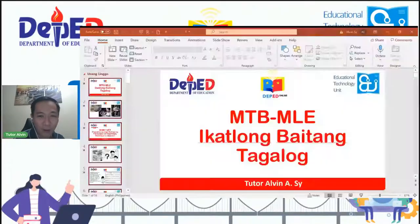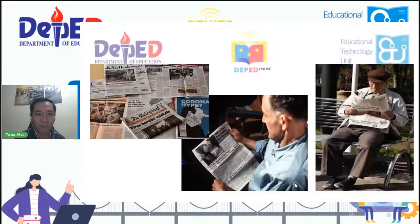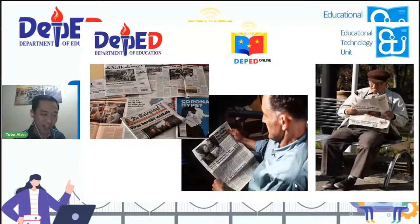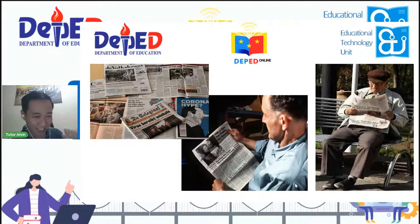Simulan na natin ang ating aralin sa araw na ito. Ngayon, ating tatalakayin ang panibagong aralin dito sa MTB MLE ikatlong baitang Tagalog. Nakikita ba ninyo kung ano ang mga nasalarawan? Sa ating mga mag-aaral, pwede kayong humingi ng tulong sa inyong mga magulang, kay ate, kay kuya, si Tita, si Tito, para i-type ang inyong mga nakikita. O kaya naman ay kayo na mismo kung alam ninyo kung paano gumamit ng cellphone — i-type lang yan sa comment box.